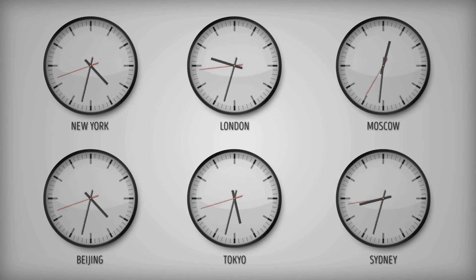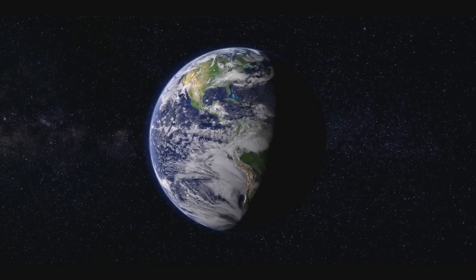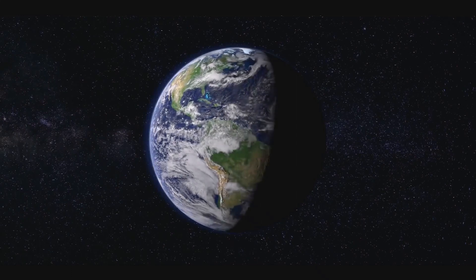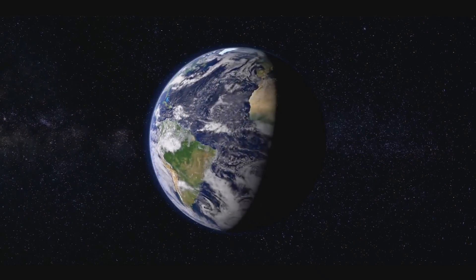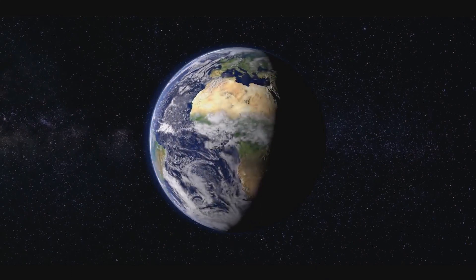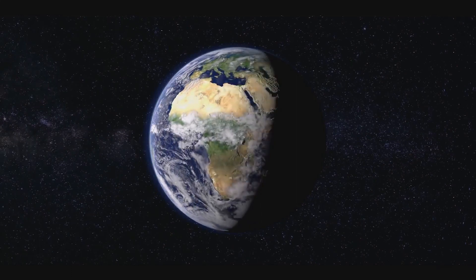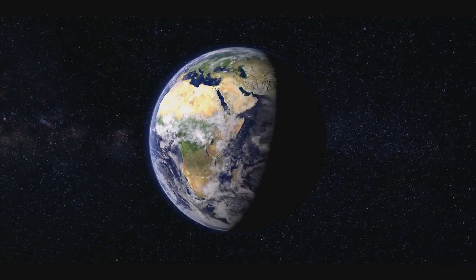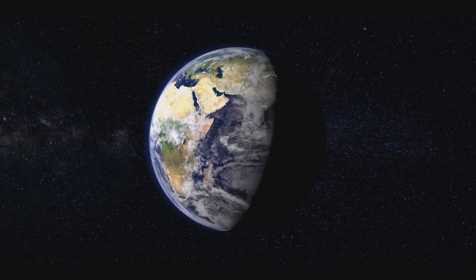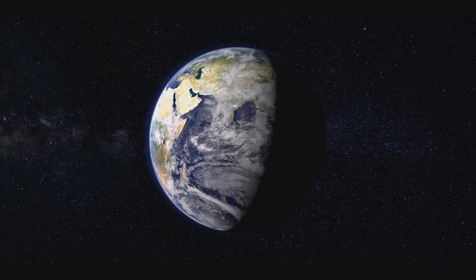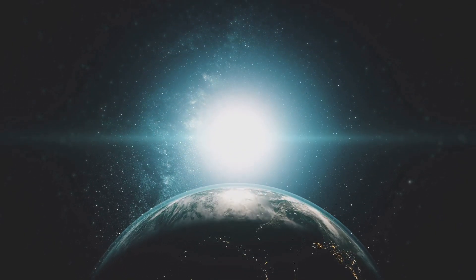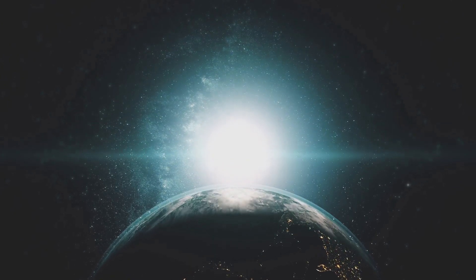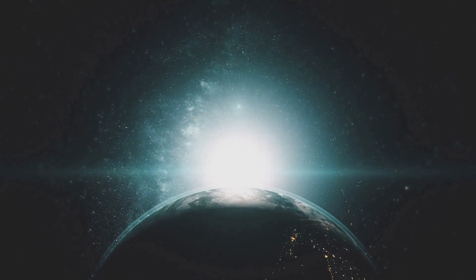The answer lies in the rotation of the Earth. The Earth is constantly rotating on its axis, completing one full rotation approximately every 24 hours. This rotation is what gives us day and night, as the Earth spins and different parts of the planet face the sun at different times.